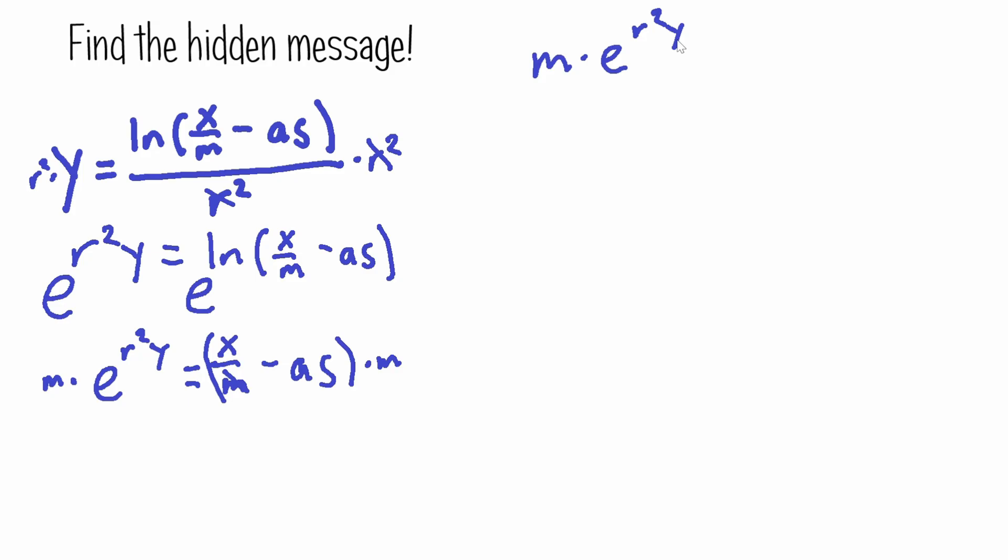Is equal to x. So this x over m, the m cancel each other out, right? So it's just going to be x minus a s times m.